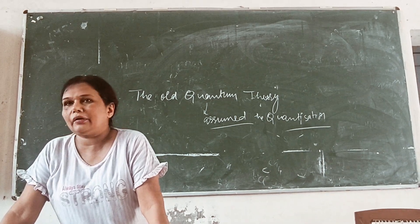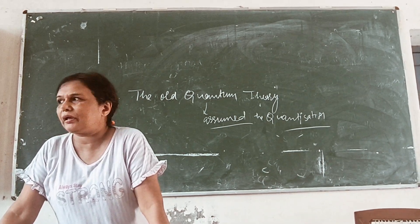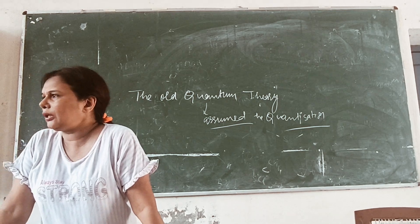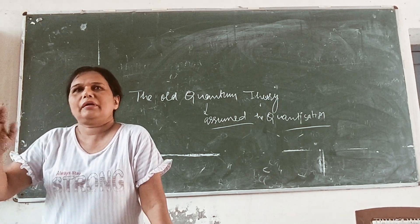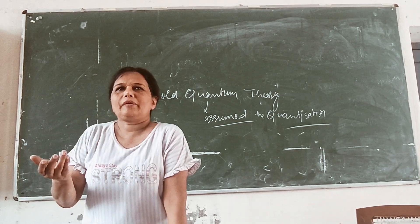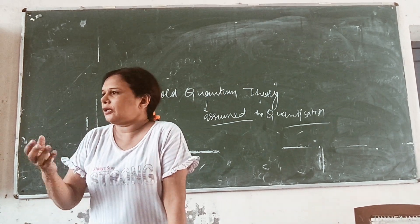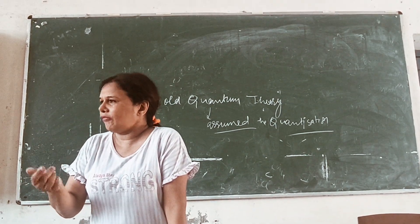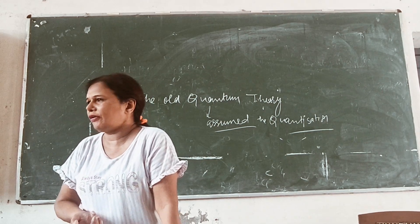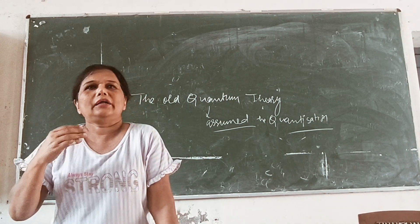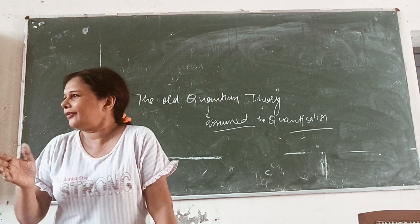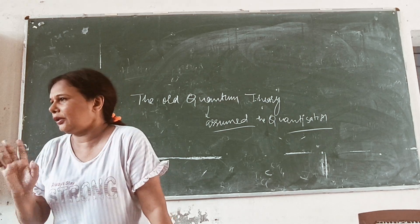The classical theory of radiation is called radiation based on material particles. The electromagnetic spectrum gives a result in the form of radiation — continuously, not discontinuously.